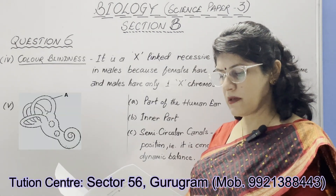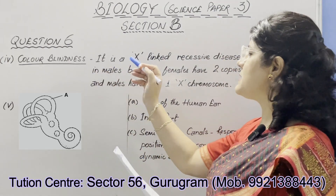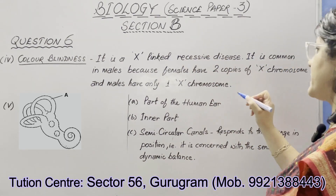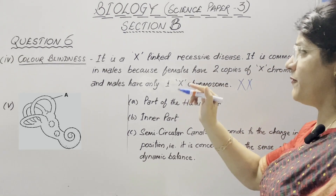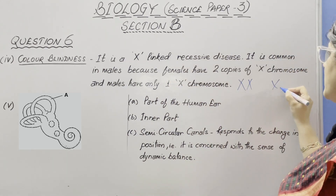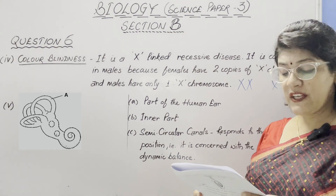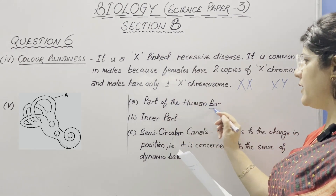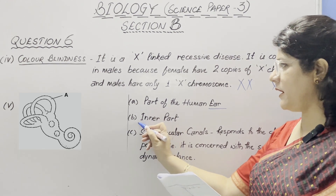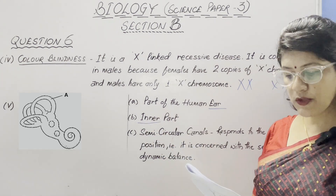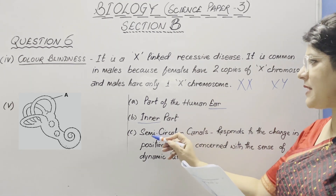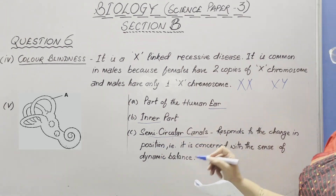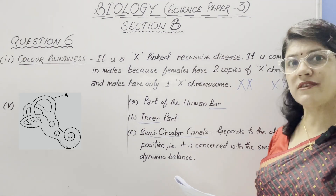In part number four, color blindness is generally seen in males — explain. Color blindness is an X-linked recessive disease. It is common in males because females have two copies of the X-chromosome (XX), while males have only one X-chromosome (XY). A diagram is also given — identify the structure, which is a part of the human ear located in the inner ear. Part A represents semi-circular canals, which respond to change in position and are concerned with the sense of dynamic balance when the body is in motion.